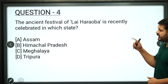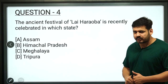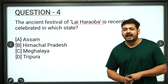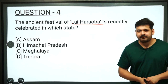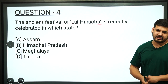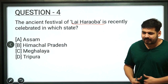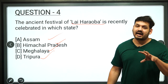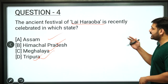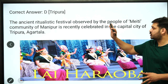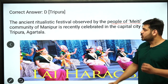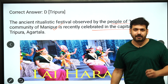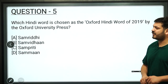The fourth question is about an important festival — Lai Harubba. Which state recently celebrated this festival? It is celebrated by a community. The correct answer is Agartala, which is the capital of Tripura — option number D. Remember, this festival is asked many times. It is an ancient ritualistic festival celebrated by a tribal community from Manipur, but it was recently celebrated in Agartala.